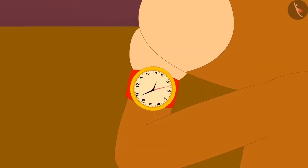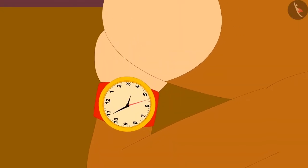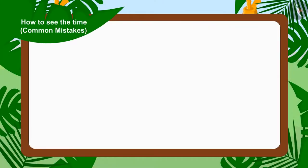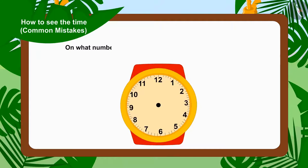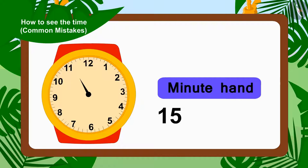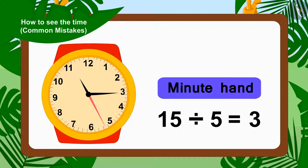And Babban saw the time as 11 hours 15 minutes. Can you tell where the needles of the watch need to be to show the time as 11 hours 15 minutes? That's correct. At 11 hours 15 minutes, the hour needle is between 11 and 12, and the minute needle will be at 15 divided by 5, that is number 3.